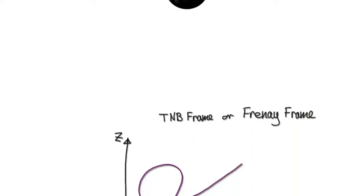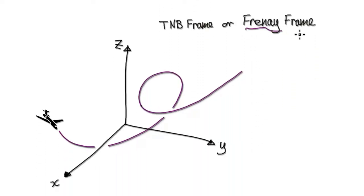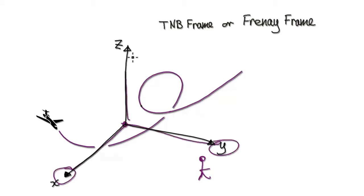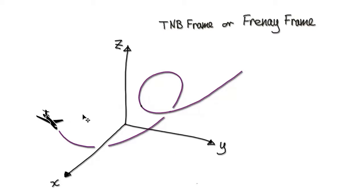In this video I'm going to introduce you to the TNB frame, also known as the Frenet frame. Imagine you're standing here and the origin is here. In the past we've always worked in terms of the x-axis, the y-axis, and the z-axis. The idea behind the TNB frame is that you reference everything in terms of the pilot rather than a fixed origin.